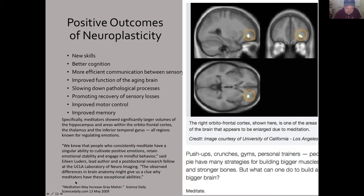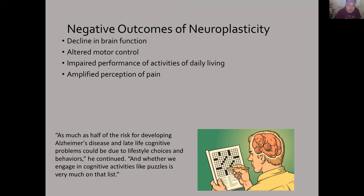The observed differences in brain anatomy might give us a clue why meditators have these exceptional abilities — and that's from ScienceData.com, a beautiful website that collates all sorts of work. There are negative outcomes too: decline in brain function, altered motor control, impaired performance, and amplified perception of pain under some circumstances. But as this says below, as much as half the risk for developing Alzheimer's disease and late-life cognitive problems could be due to lifestyle choices and behaviors — whether we engage in cognitive activity like puzzles, crossword puzzles, Sudoku, reading. If you keep the brain active, it's going to stay active. And that is not disputed.